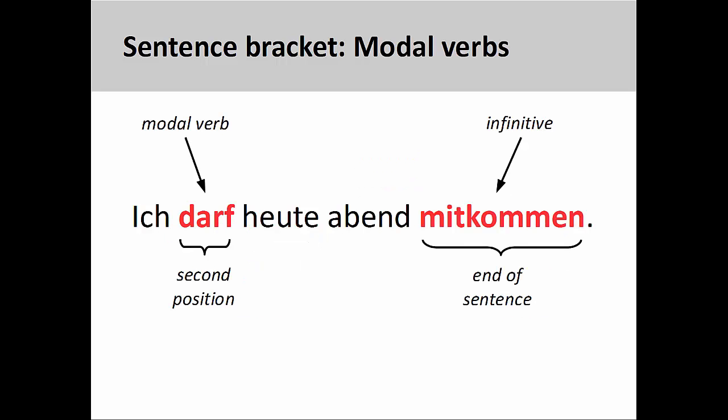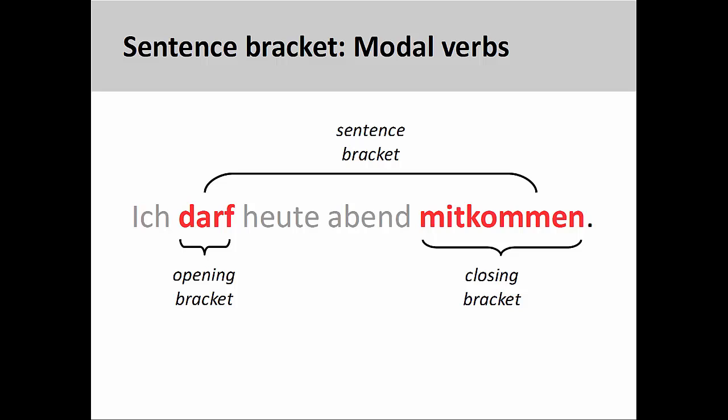For example, we also saw in the presentation on separable prefix verbs that modal verbs kick the infinitive form of the verb to the end of the sentence or clause. In the sentence you see here, the modal verb darf, meaning may, appears in the second position, and the infinitive form of the verb mitkommen appears at the end of the sentence. The modal verb forms the opening bracket, and the infinitive verb forms the closing bracket.